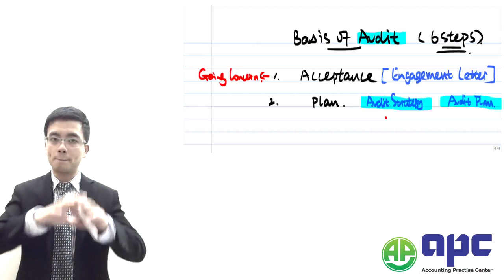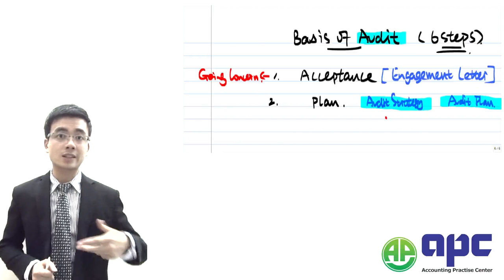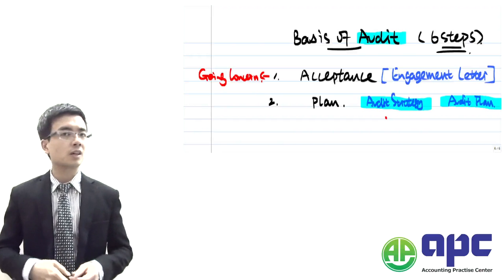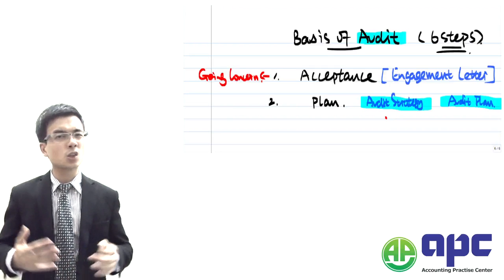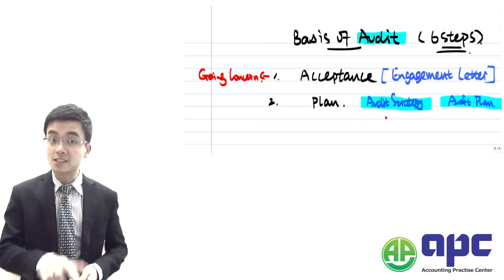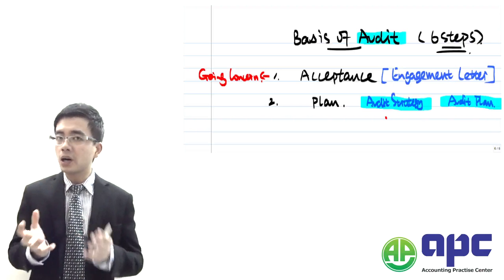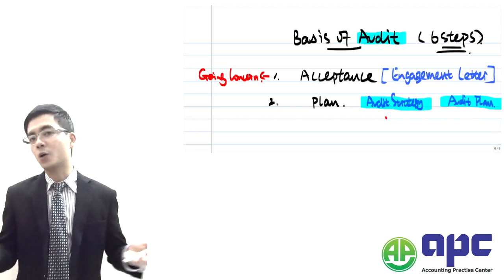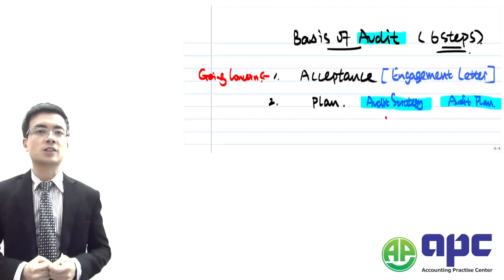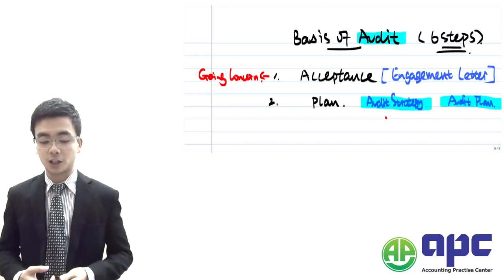The audit strategy talks about the big picture: the scope of the audit, the timing, the direction, and the nature of the audit. The audit plan actually deals with the risky areas, the planned audit procedures, as well as materiality. When planning your audit, normally we hold a planning meeting, gathering all the auditors together to come up with ideas of how to audit the financial statements of the client's company.